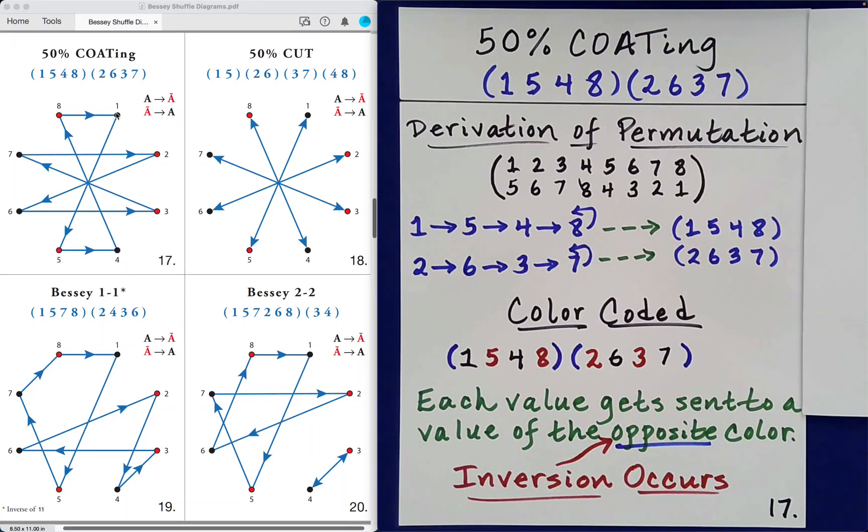So that's our first 4 cycle. We also say that the values 1, 4, 5, 8 are members of the same orbit. If we take a look at 2, 2 up here goes to 6, which goes to 3, which goes to 7, which wraps around and goes to 2. So if we start at 2, there will be an arrow from 2 to 6, an arrow from 6 to 3, an arrow from 3 to 7, and then an arrow from 7 back to 2. That completes that second 4 cycle, and those 4 values constitute a second orbit.